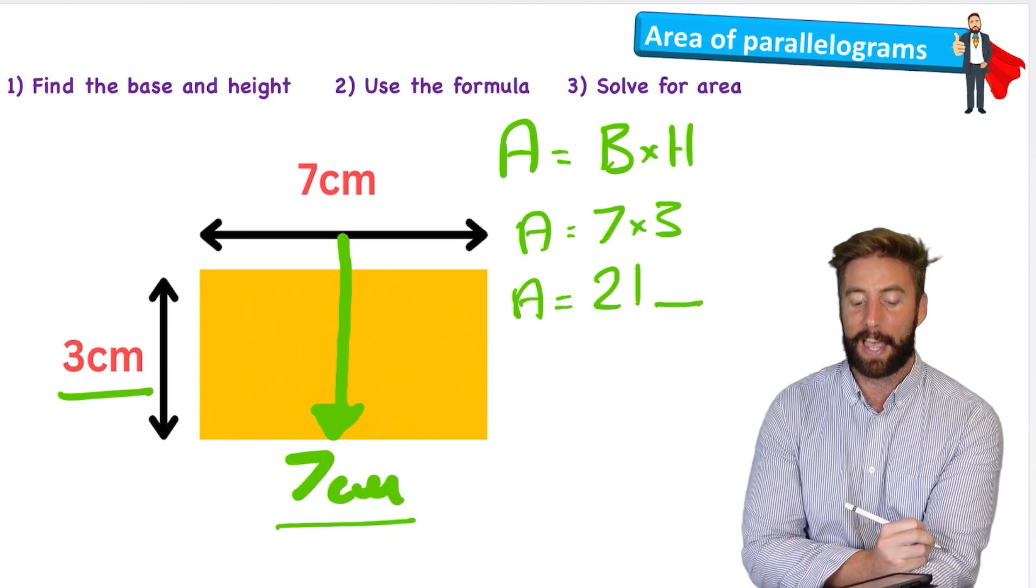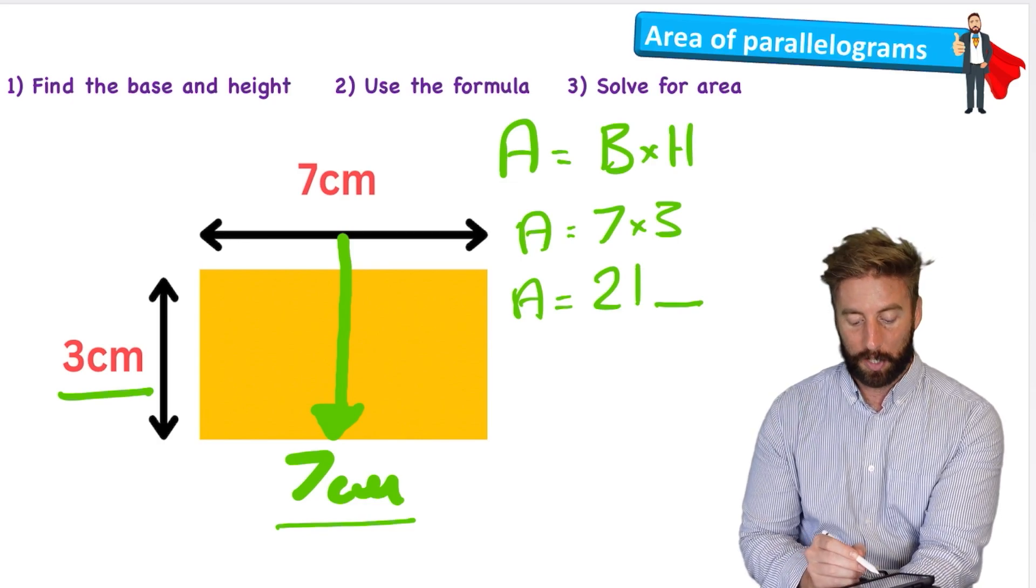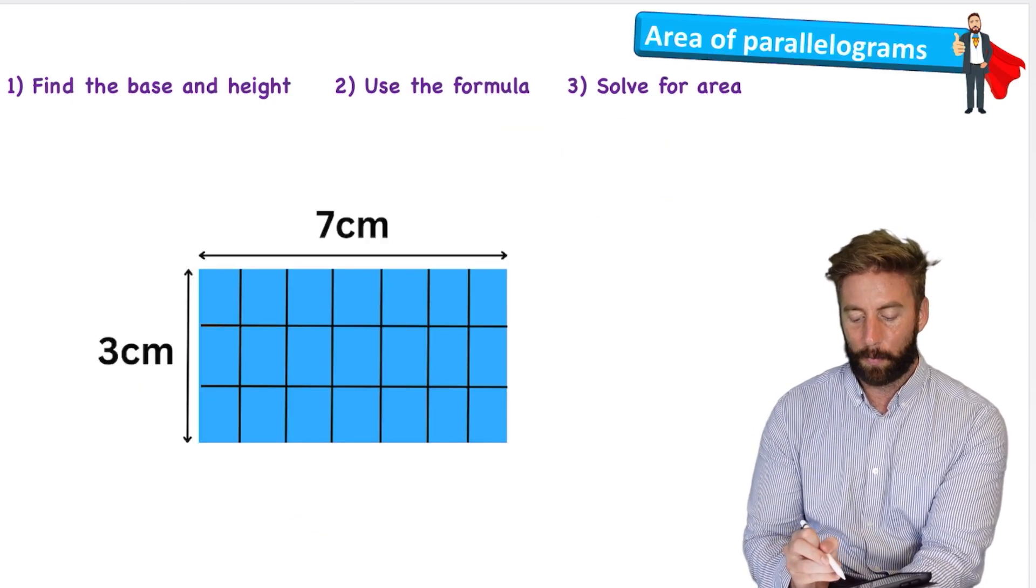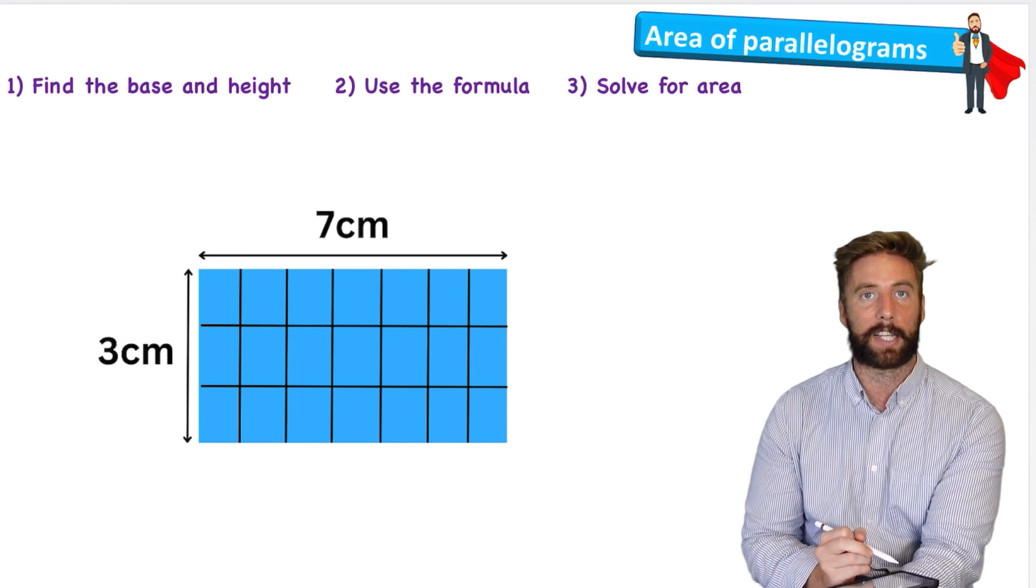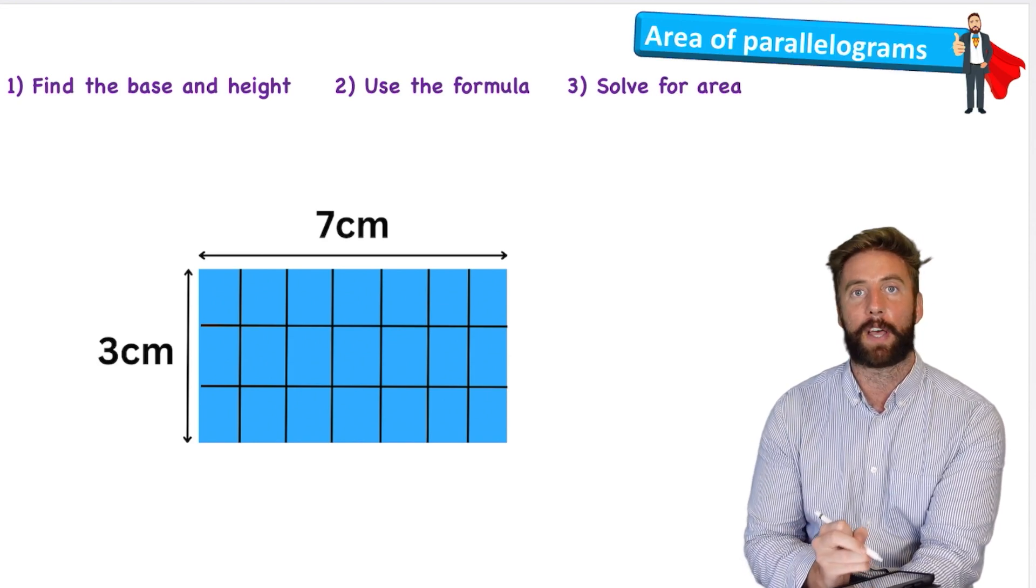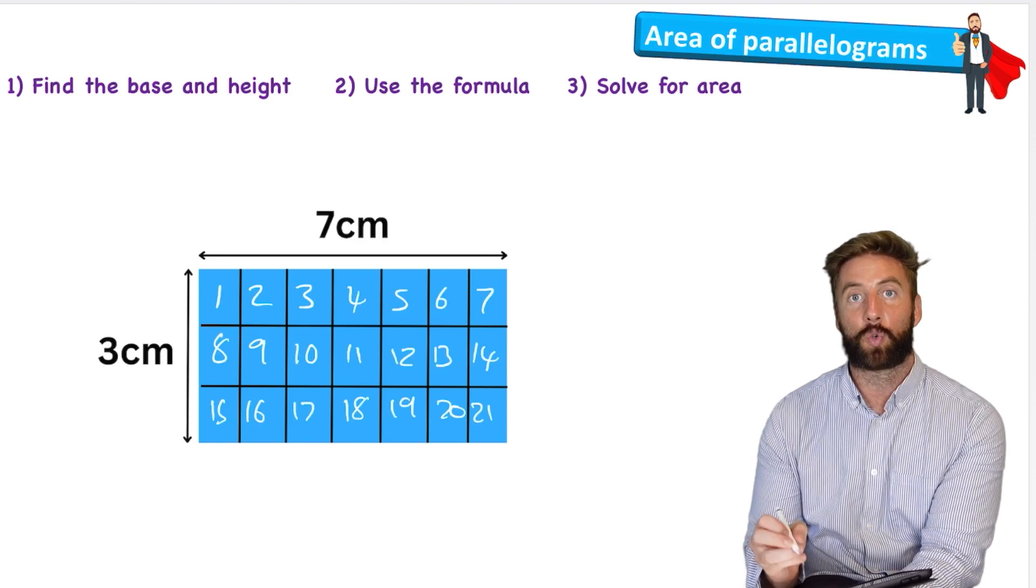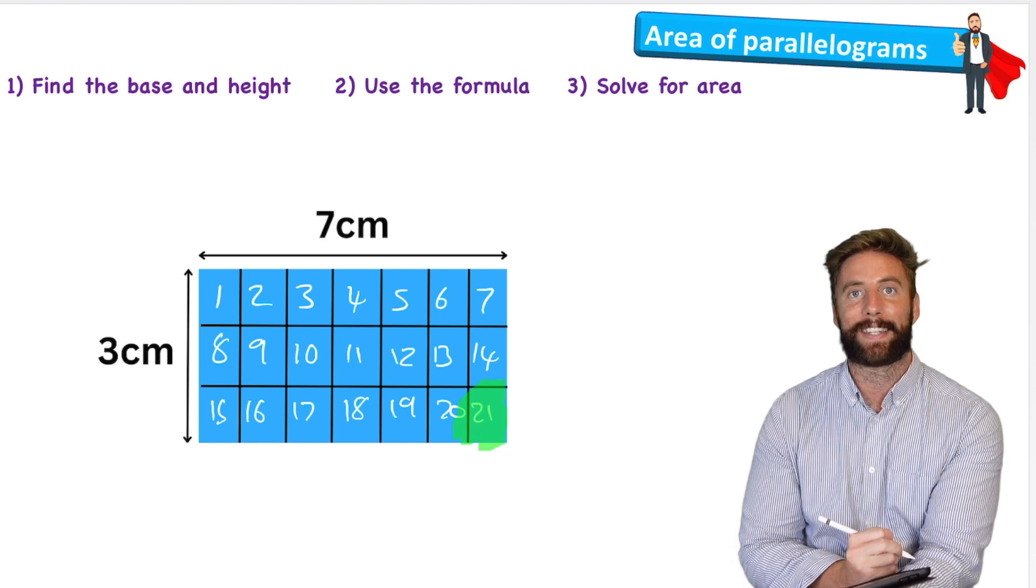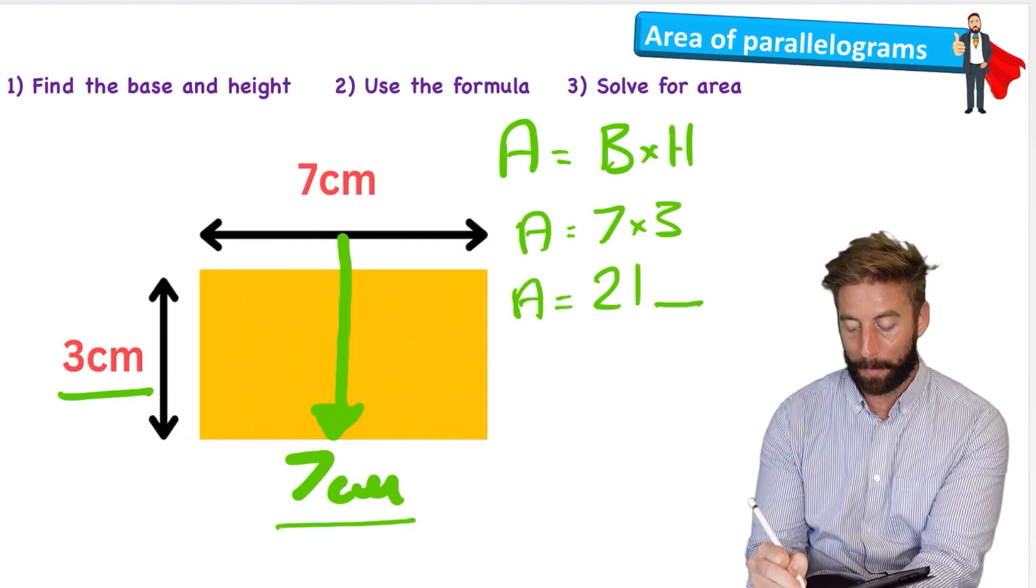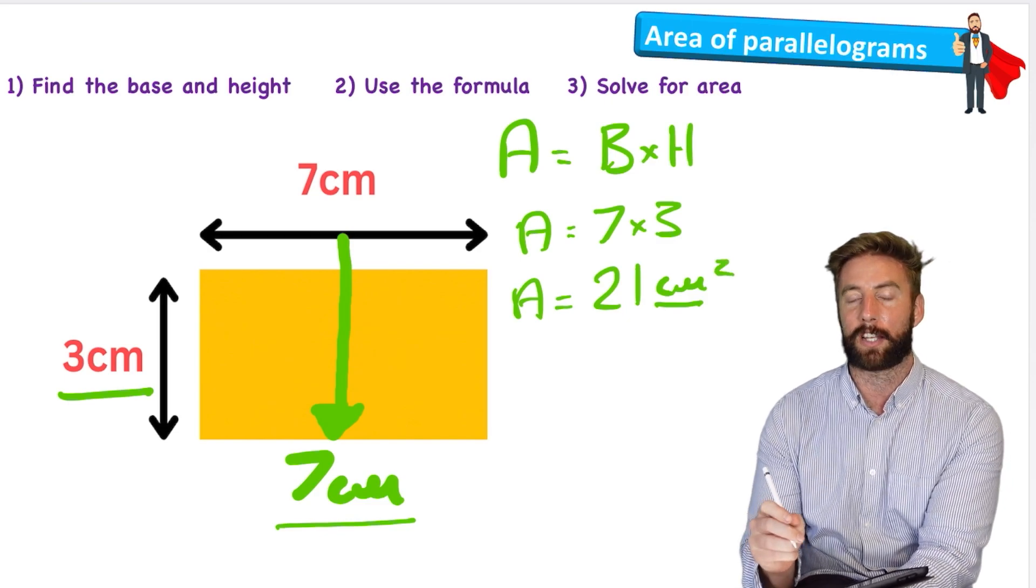So I can do area equals base, which is seven, times three. Therefore area equals 21, but 21 what? We need to have some sort of measurement here at the end. So what we've actually done is we've chopped this rectangle into squares just like this. We have seven centimeters at the top and three centimeters down the side, so I've made seven columns and three rows, giving me a total of 21 squares.